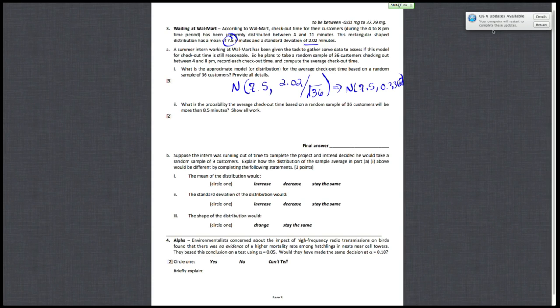Alright, so the second question is, what's the probability that average checkout time based on a random sample of 36 customers will be more than 8.5 minutes? Alright, so since you're given your population distribution, and this is not like a hypothesis test or anything, you just want to use your regular equation for z-scores.